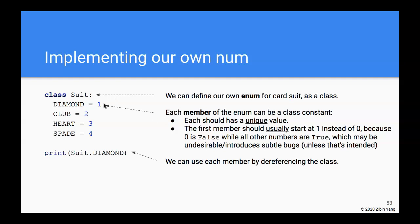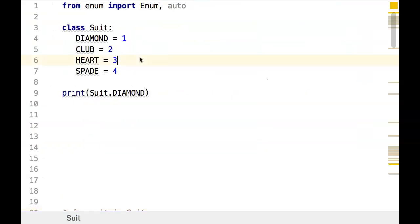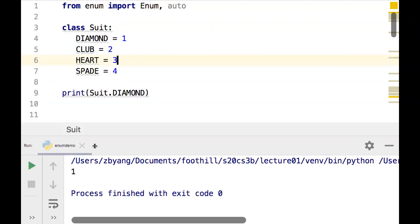Having defined it this way, we can access each of the members of the suit as suit.DIAMOND. So if we want to print out suit.DIAMOND, when we run it, it's going to print out 1.